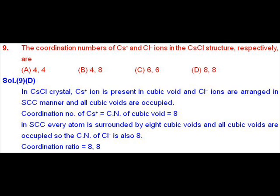In CsCl crystal, chloride ions are arranged in primitive type of unit cell. That means chloride ions are present at each corner of the cube. And cesium ions are present in cubic voids, which is at the center of the cube.